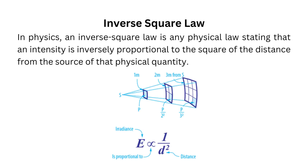Inverse square law: in physics, an inverse square law is any physical law stating that an intensity is inversely proportional to the square of the distance from the source of that physical quantity. The formula of the inverse square law states that irradiance is inversely proportional to the square of distance. Let's suppose that at a distance of one meter the irradiance is p.